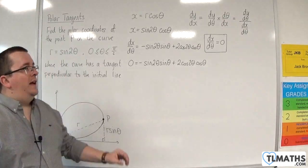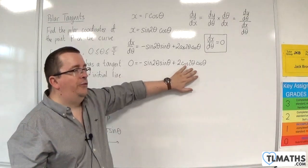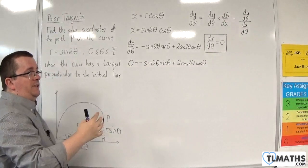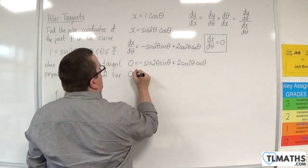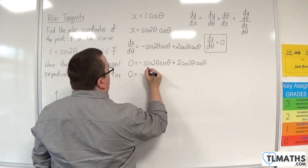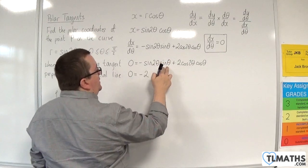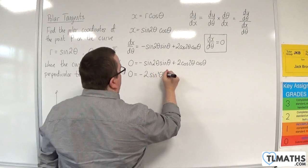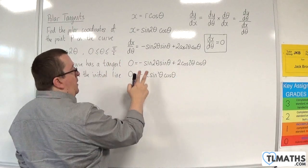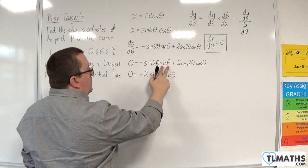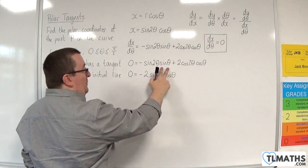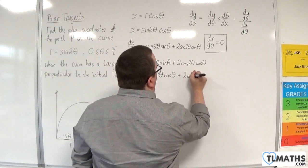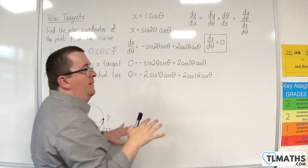We can apply the double angle formulae here — we have sin2θ and cos2θ. Replacing sin2θ with 2sinθ cosθ gives: 0 = −2sinθ cosθ · sinθ + 2cos2θ cosθ. Without writing another line of working, we can rewrite −2sinθ cosθ · sinθ as −2sin²θ cosθ.